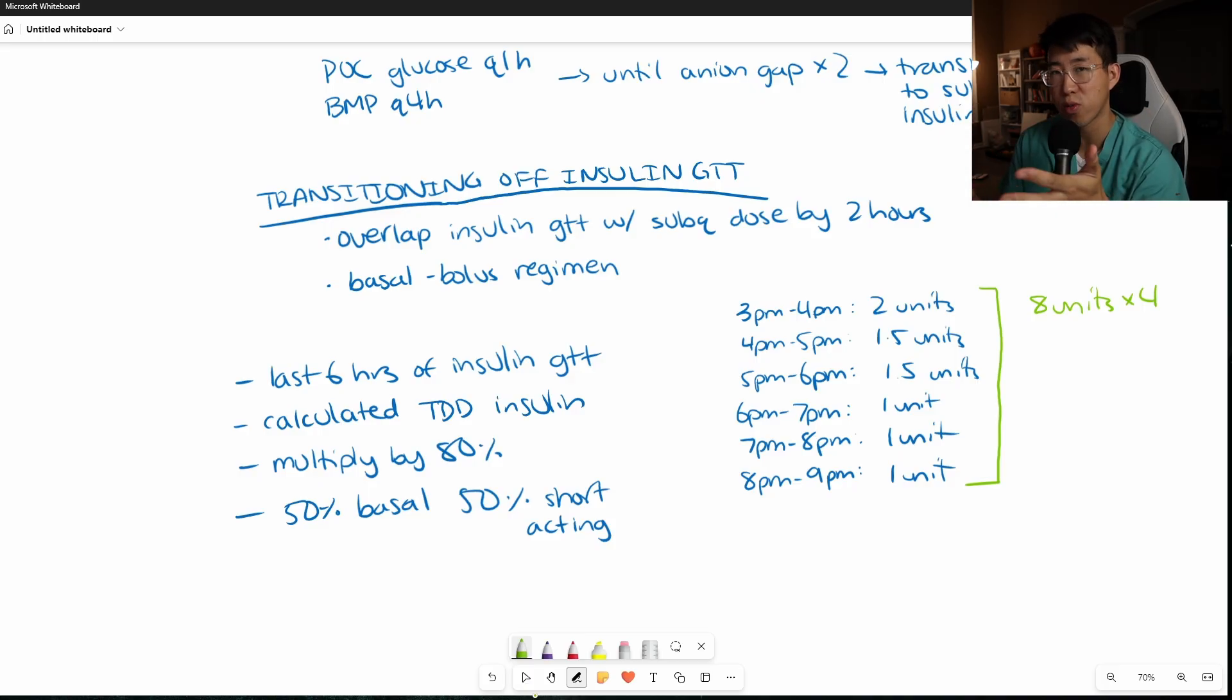And then in order to calculate their total daily dose, we're going to have to multiply this by four, because this is a six hour period. And we're trying to see how much insulin are they going to be expected to use over a 24 hour period. So this would get us a 32 unit total daily dose of insulin. Now with this 32 units, now we're going to multiply this by 80% to kind of reduce it a little and just be a little bit more conservative. So let's say that's roughly 26 units of insulin. And now we're going to split this 50% into long acting. So they're going to get 13 units of glargine, which is long acting.